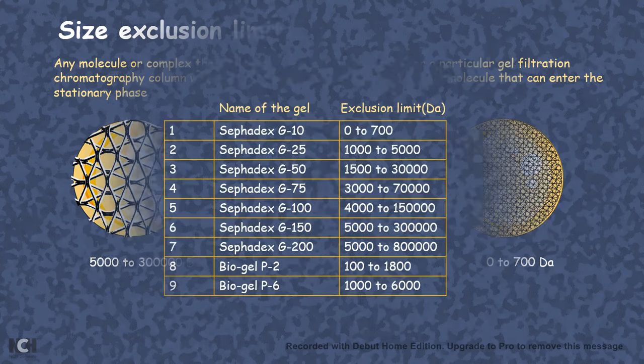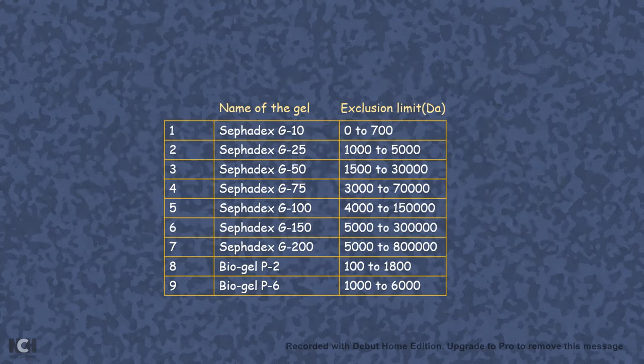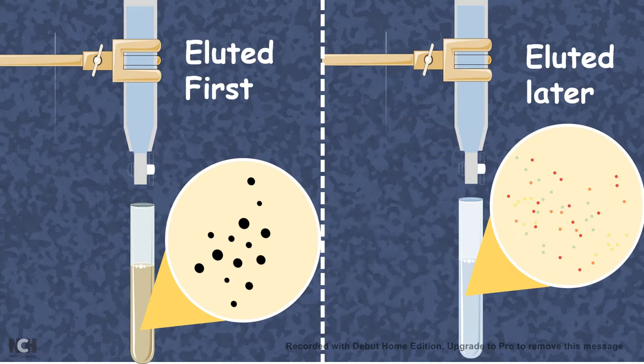Right now there are various types of beads which are available in the market, such as Sephadex which is based on dextran, Biogel P based on polyacrylamide, or Sepharose which is based on agarose.